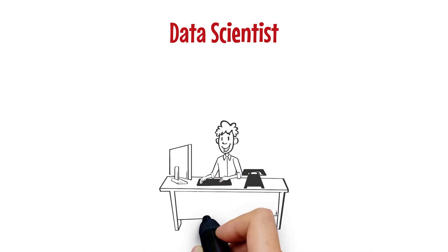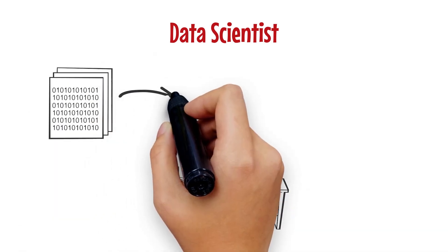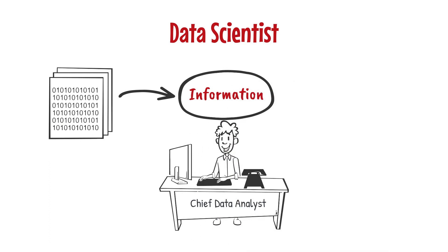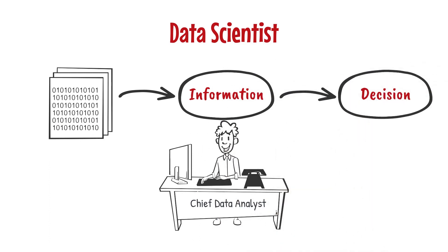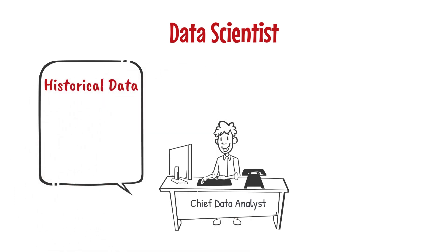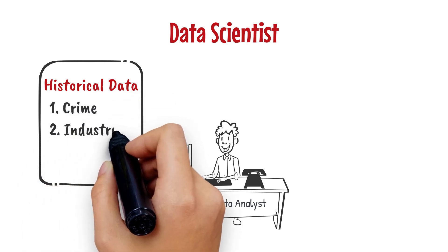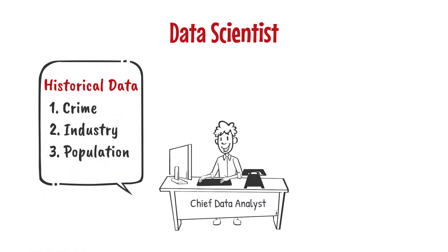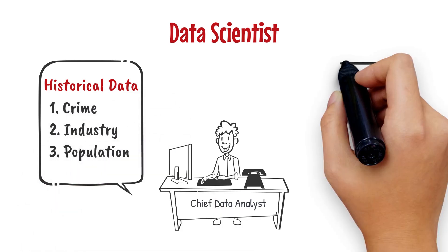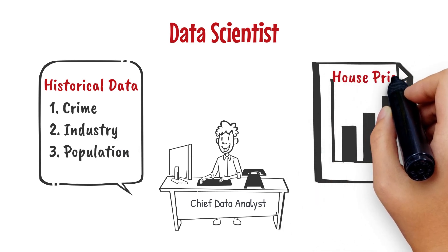As data scientists, our job is to extract the knowledge and insights from data, then to support decision-making. For example, we are given the historic data of a city, which includes the information about crime, industry, and population. Now, we are interested in predicting the house price.